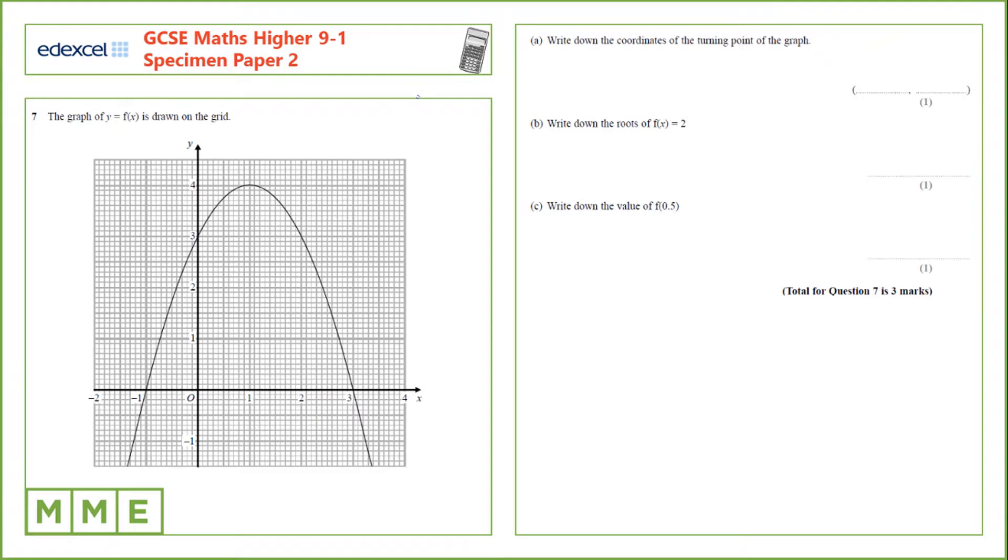Question 7. The graph of y equals f of x is drawn on the grid. Write down the coordinates of the turning point of the graph.